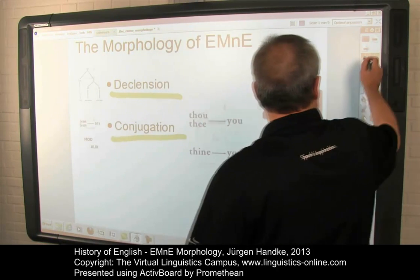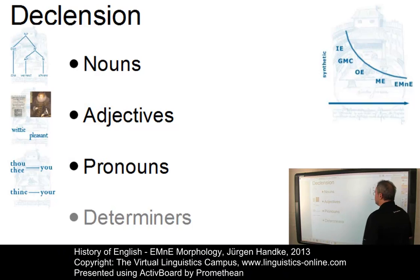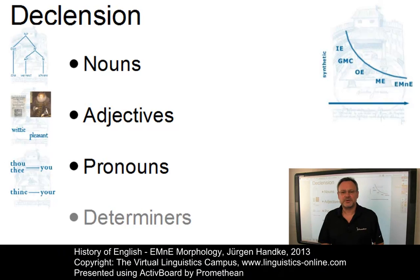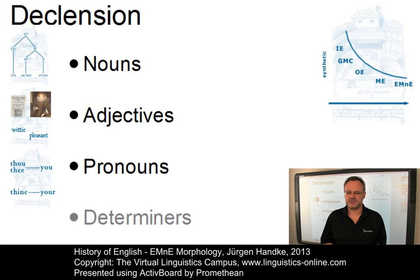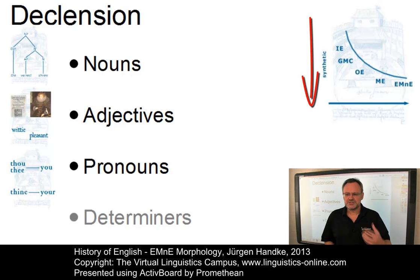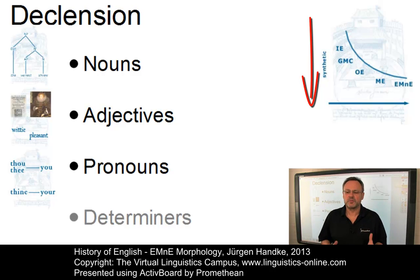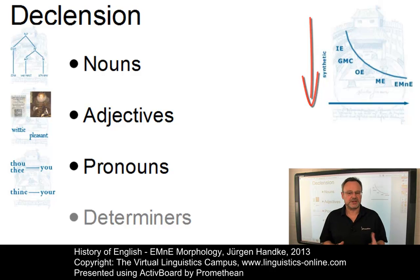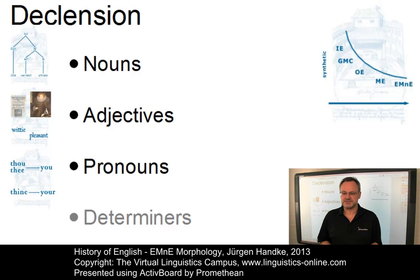Let us start with the discussion of declension. Early modern English was no longer a true synthetic language. In many ways, it had become an almost analytic language, relying on word order and particles to indicate the relationships among the words within a sentence.